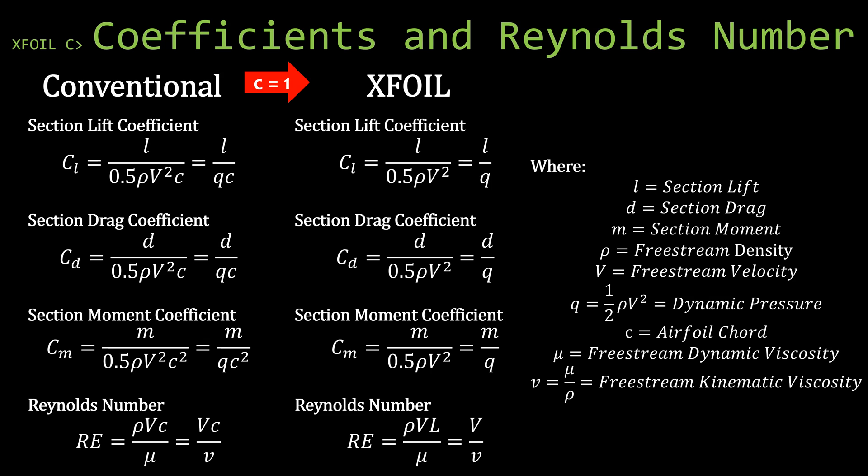In a two-dimensional lift coefficient, the lift produced by the shape is normalized by the chord. In a three-dimensional lift coefficient, the lift produced by the wing is normalized by the planform area. The section moment coefficient has a c-squared term in its denominator; a three-dimensional moment coefficient would replace one of those c's with an S to signify the planform area. That's how the conventional section coefficients and Reynolds number are calculated.